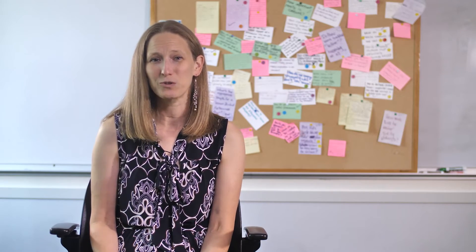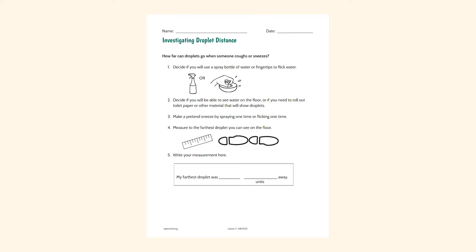In Lesson 3, students investigate how the COVID-19 virus can get out of our bodies. They work as a class to plan an investigation to explore how far water droplets can travel when they're sprayed or flicked with their fingers.